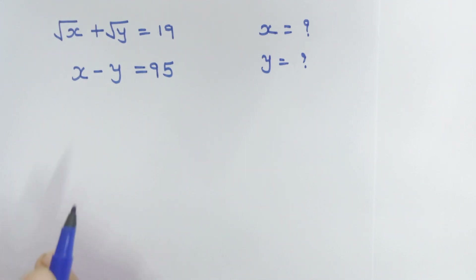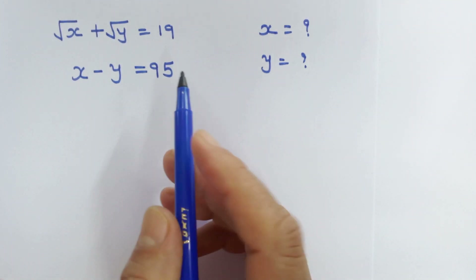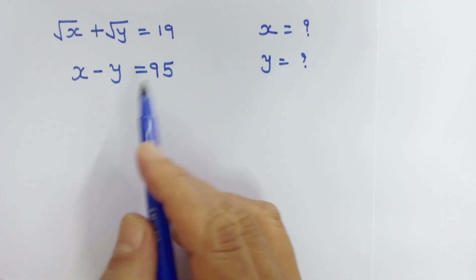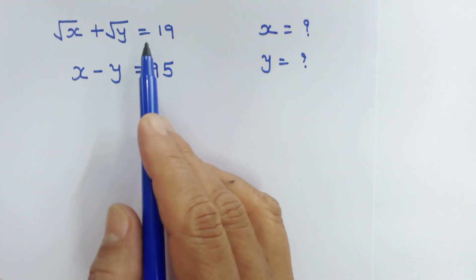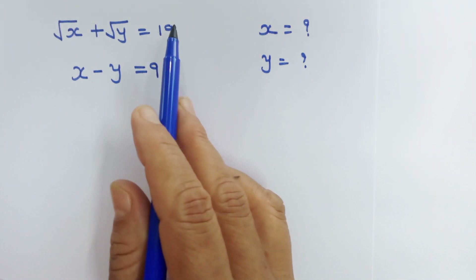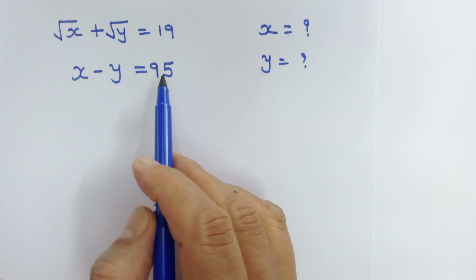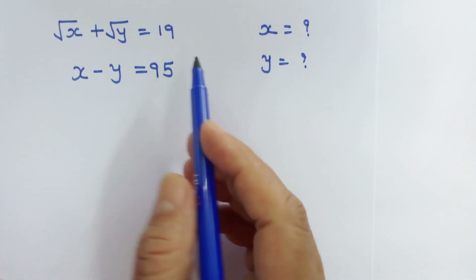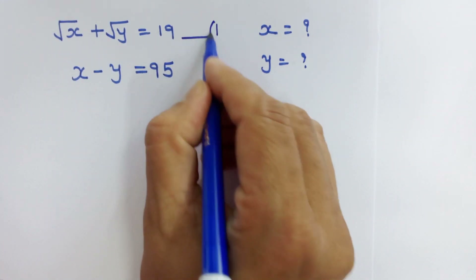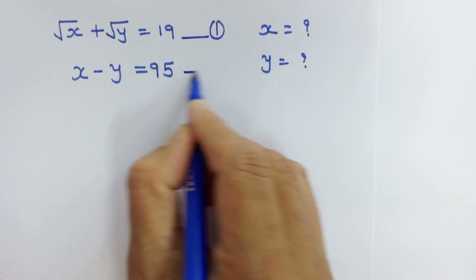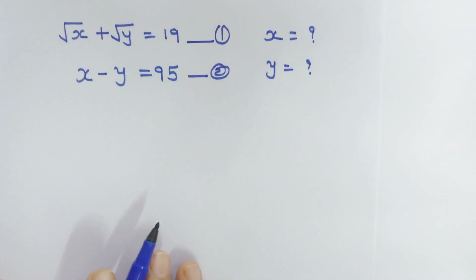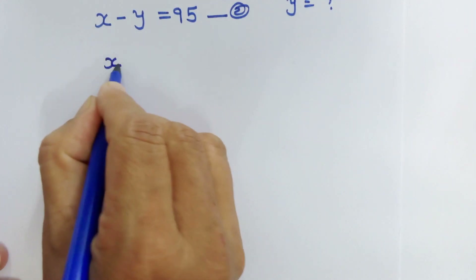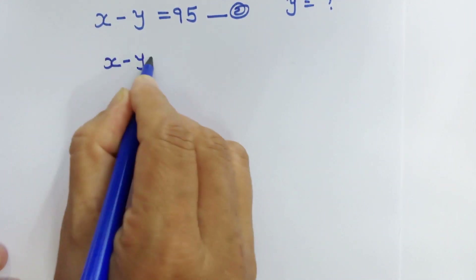Hello friends, so how can we find the values of x and y? The equation itself is giving a hint — can you see 19 fives are 95? Okay, just keep it in mind and let's start. Let's call this equation number 1 and this equation number 2.